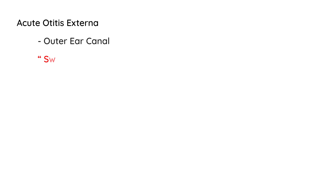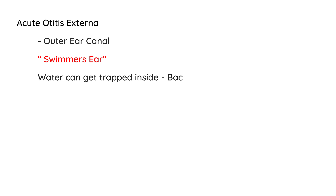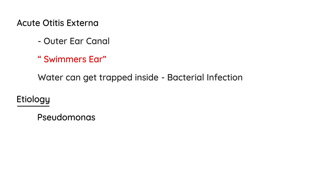Acute otitis externa involves an infection of the outer ear canal and is nicknamed swimmer's ear because when a person goes swimming, water can get trapped inside and cause a bacterial infection. In terms of etiology, the most common organism that causes acute otitis externa is Pseudomonas, and in particular Pseudomonas aeruginosa.